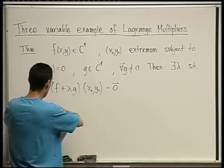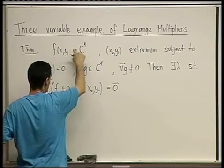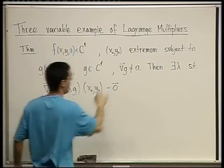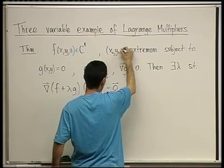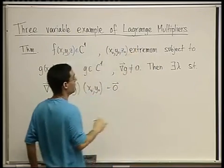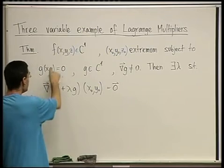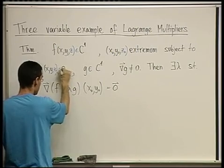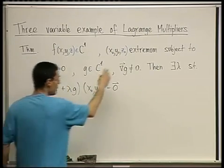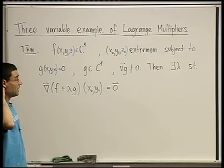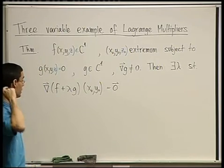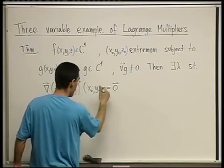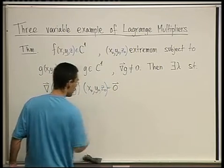So what's a three-variable example? f is now going to be a function of three variables, f of x, y, z. The extremal point is going to be a point of the form x₀, y₀, z₀, and it's an extremum subject to some constraint of the form g of x, y, z equals zero — a C¹ function of which the gradient does not vanish. Then there exists a scalar lambda such that the gradient of f plus lambda g at the point x₀, y₀, z₀ is zero.